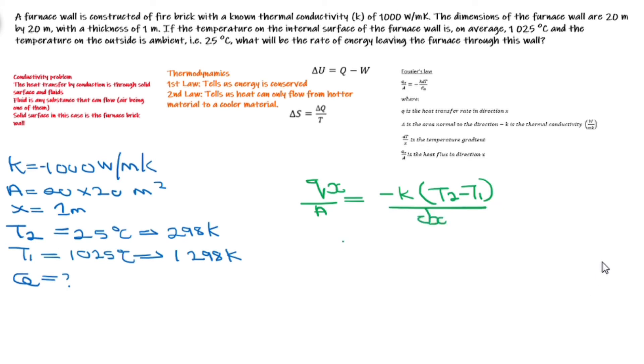If we substitute, we should have negative 1000 multiplied by the change in temperature, which is 298 minus 1298 Kelvin.